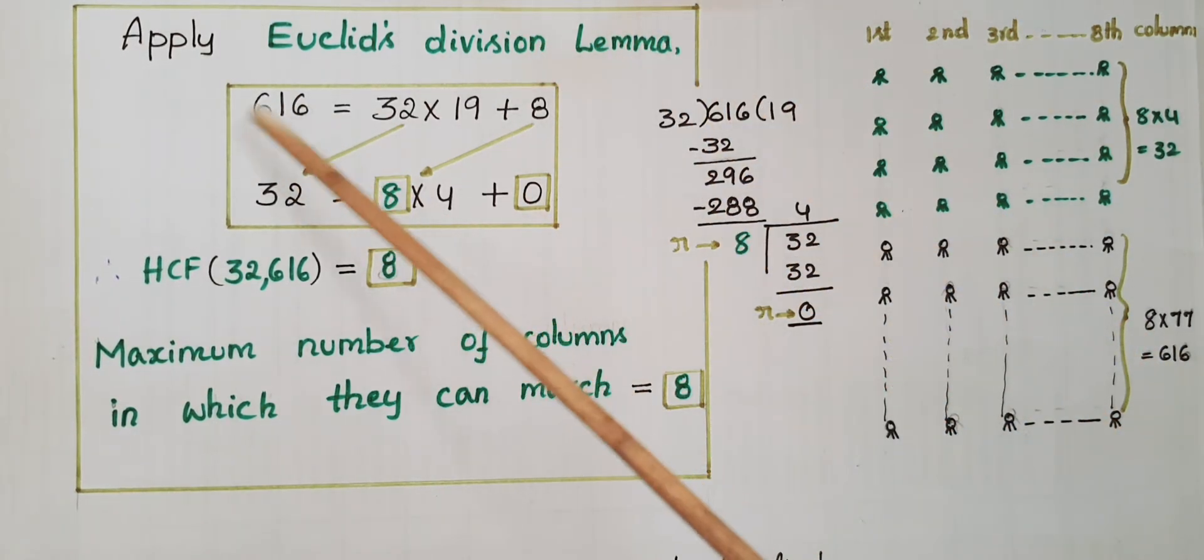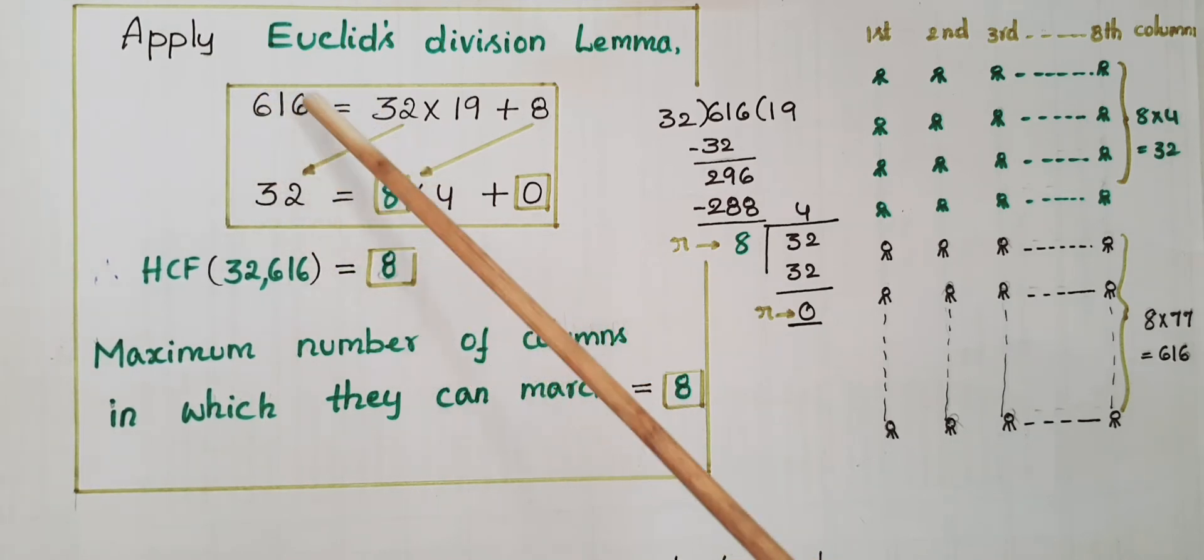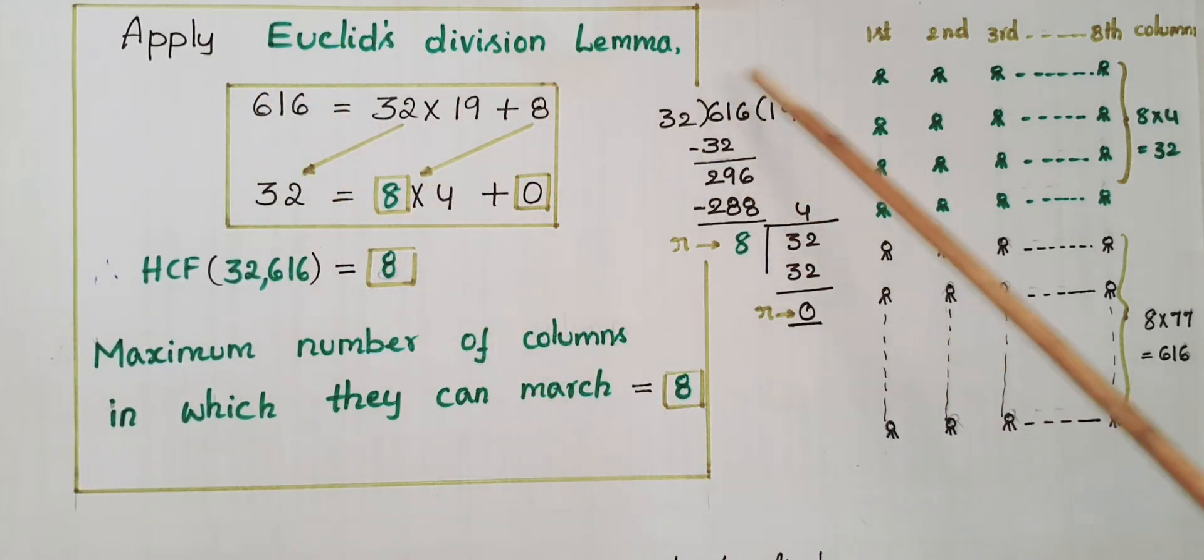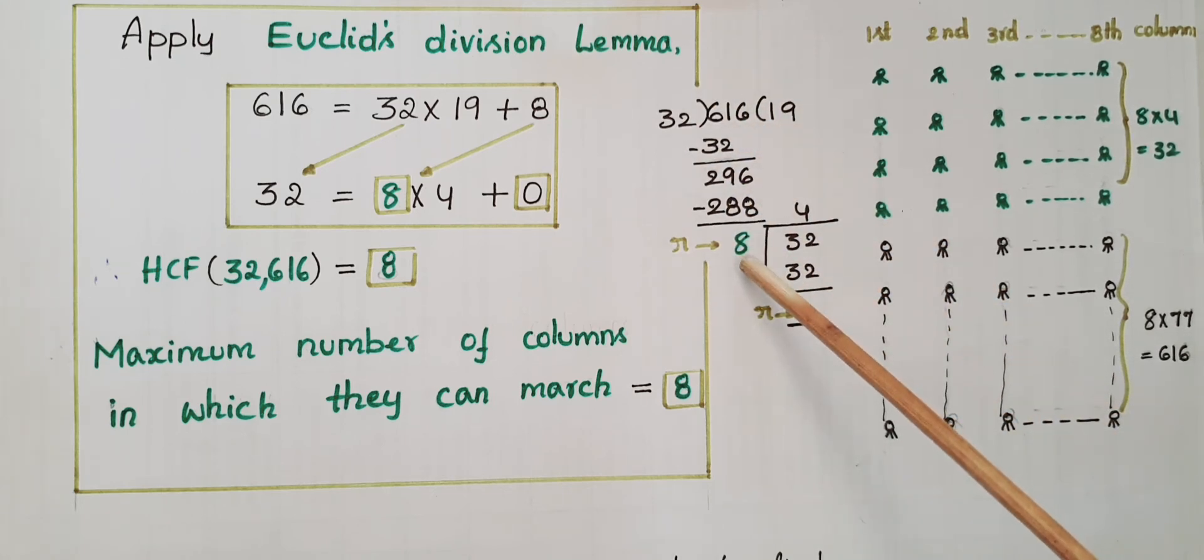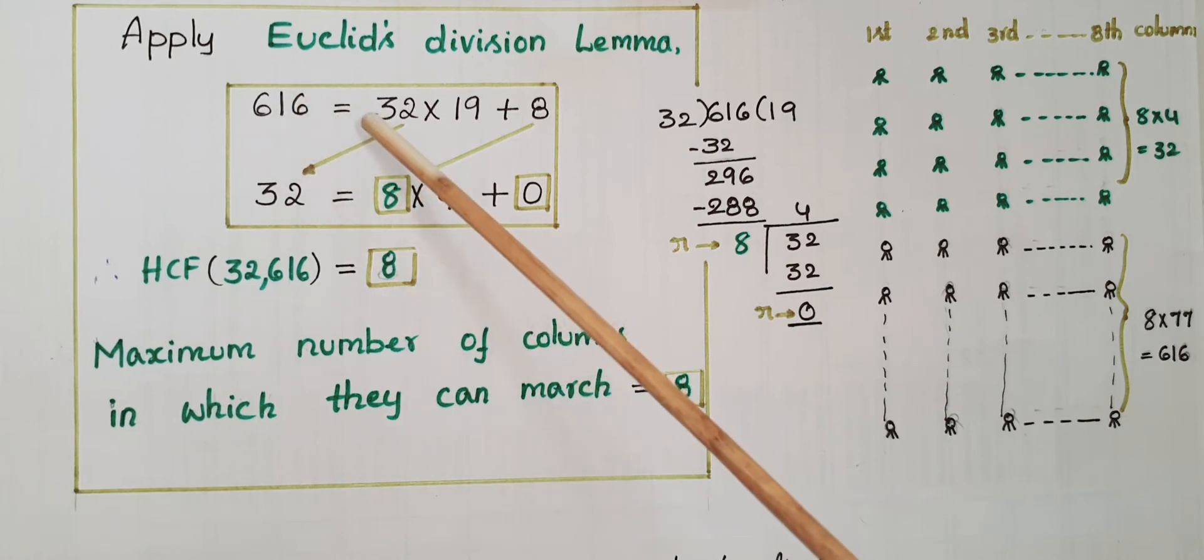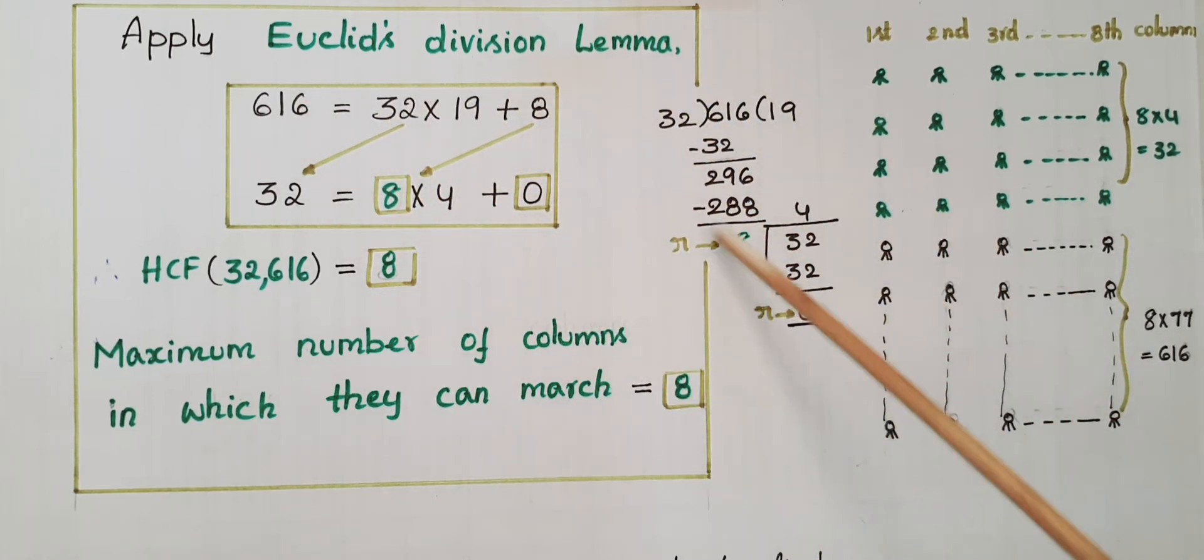Here 616 is larger than 32, so divide 616 with 32. Then 32 ones are 32, then 29, and bring down this 6. Then 32 nines are 288, then the remainder is 8. So 616 we can write as 32 into 19 plus the remainder is 8.